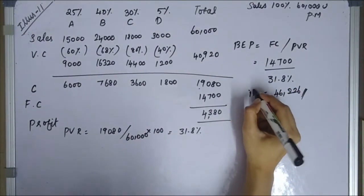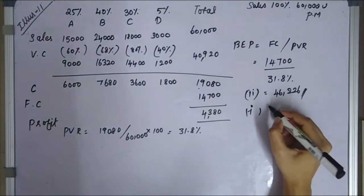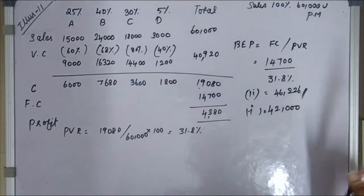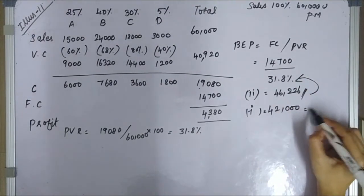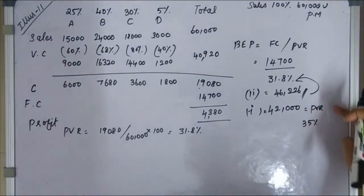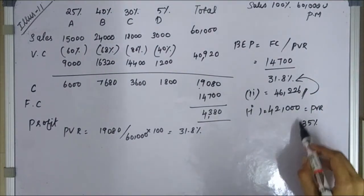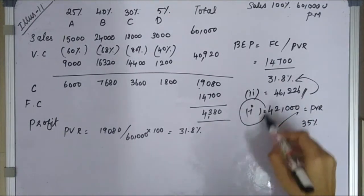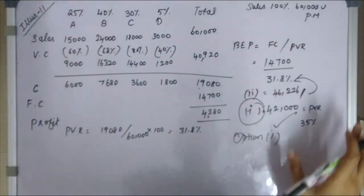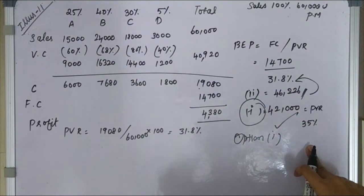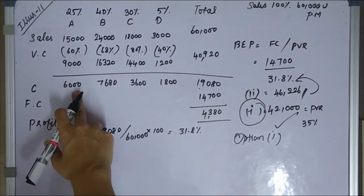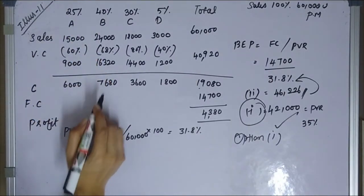So for the second scenario, BEP is approximately 46,226. Comparing both options: the first sales mix gives a PVR of 35% and BEP of 42,000, while the second gives PVR of 31.8% and BEP of 46,226. Option one is the best option because it has a higher PVR of 35% and a lower break-even point of 42,000.